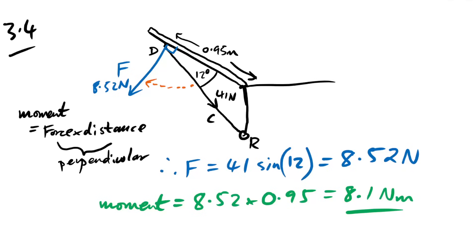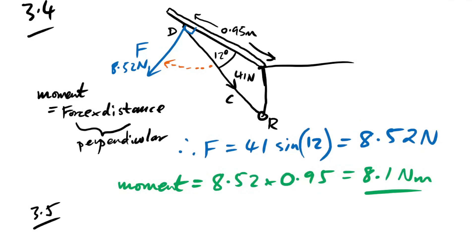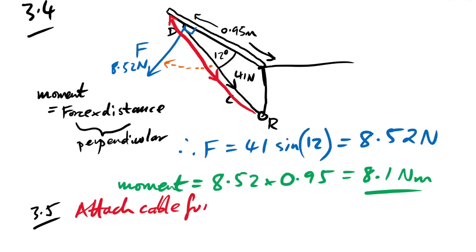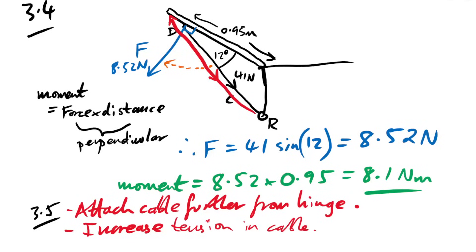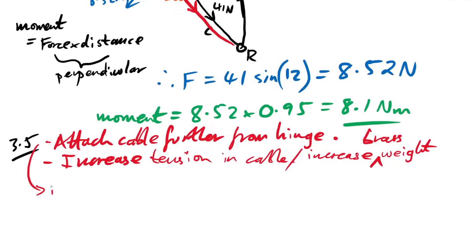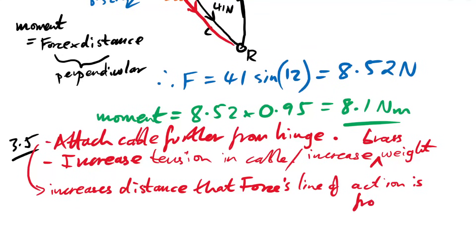Question 3.5: how could we increase the moment with stiffer hinges? We could attach the cable further from the hinge — this increases the distance from the pivot — or increase the tension in the cable, for example by increasing the weight of the brass cylinder. Both suggestions increase the moment.